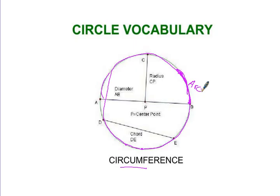The radius of the circle is the distance from the middle to the outside edge. That's called the radius. Here's a radius, and here's a radius.